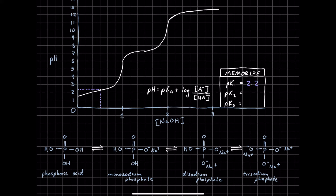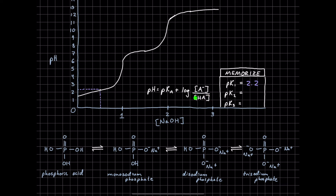One thing we should know is that when the pH is greater than the pKa, we deprotonate something. And that should make sense according to our Henderson-Hasselbalch equation shown right here — this is definitely one of the equations you need to have memorized for the MCAT. We can see that if the pH is greater than the pKa, the deprotonated form has to be a greater concentration than the protonated form, and vice versa. So if our pH is less than the pKa, then our protonated form will dominate in solution.